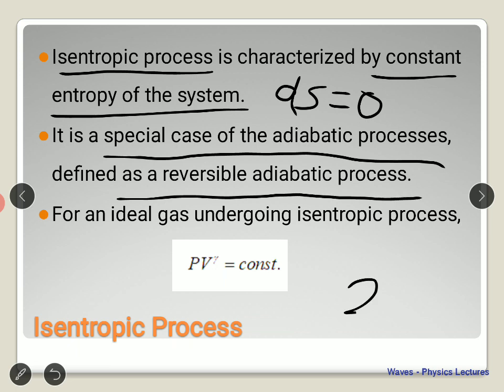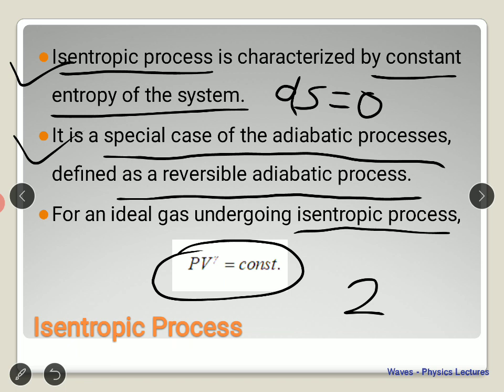A possible two-mark objective question might be: what is the isentropic process? Remember, whatever is on the slides will be part of the syllabus — don't ignore it. For the adiabatic process, PV^γ = constant, and for the isentropic process also PV^γ = constant.